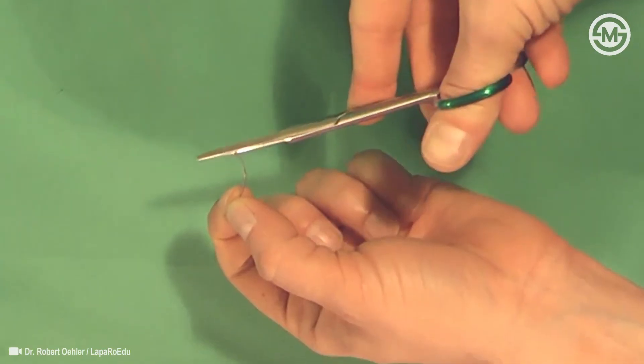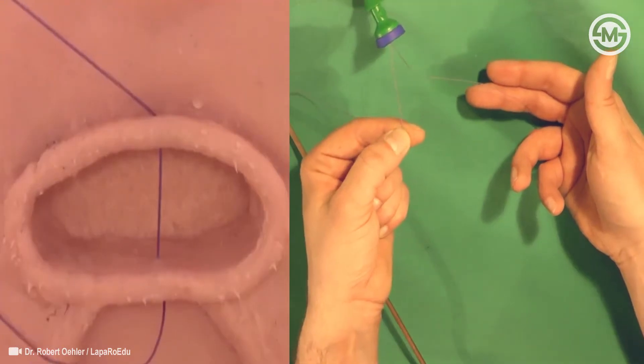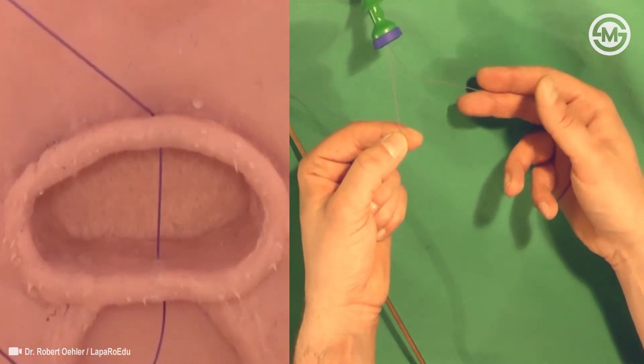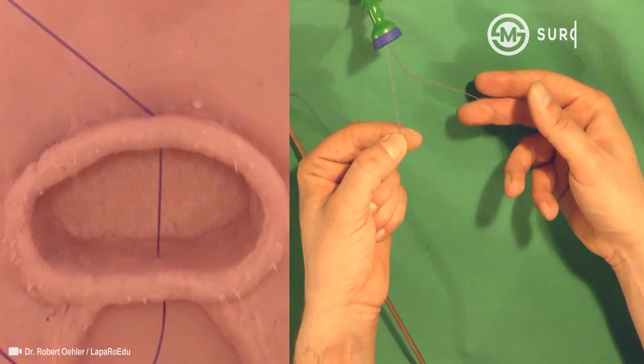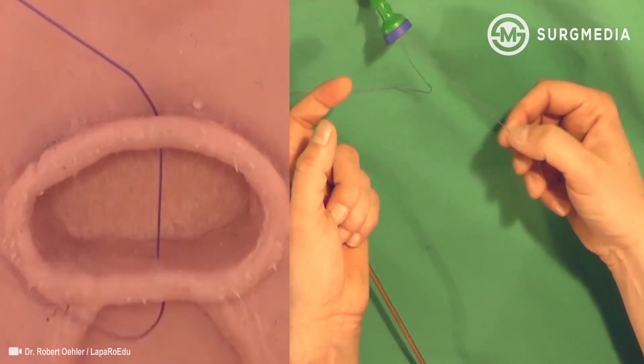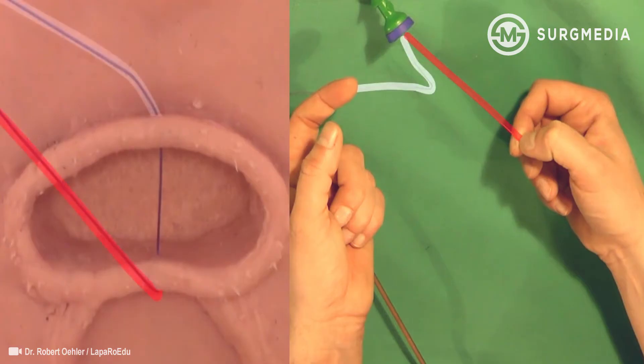Cut off the needle to avoid injuries. The anterior part of the suture with nut pusher is marked in white. The posterior part, which will be under tension, is marked in red.